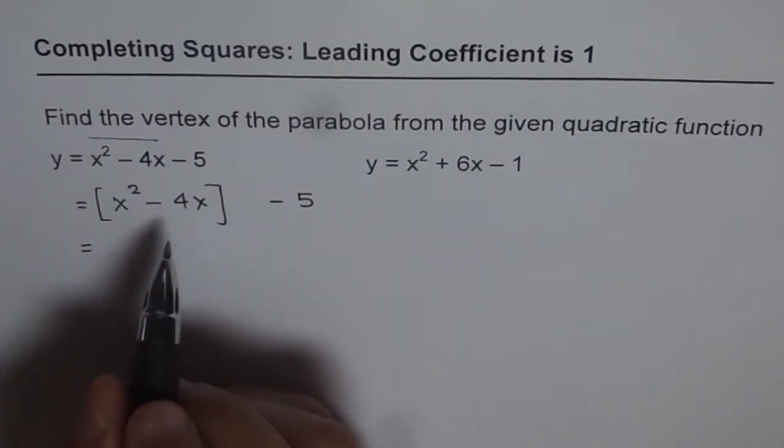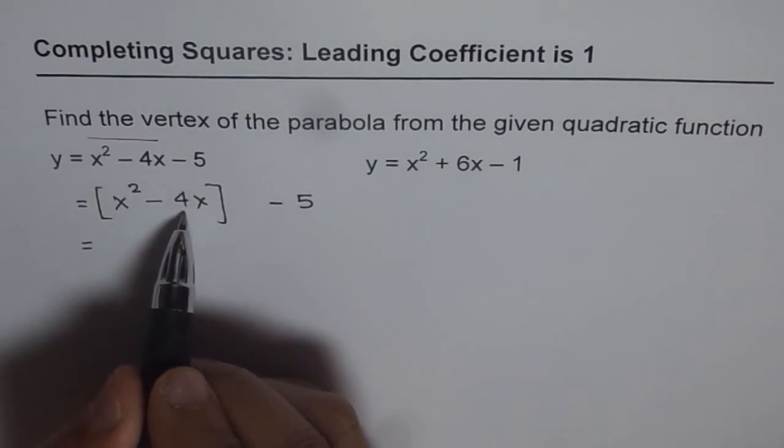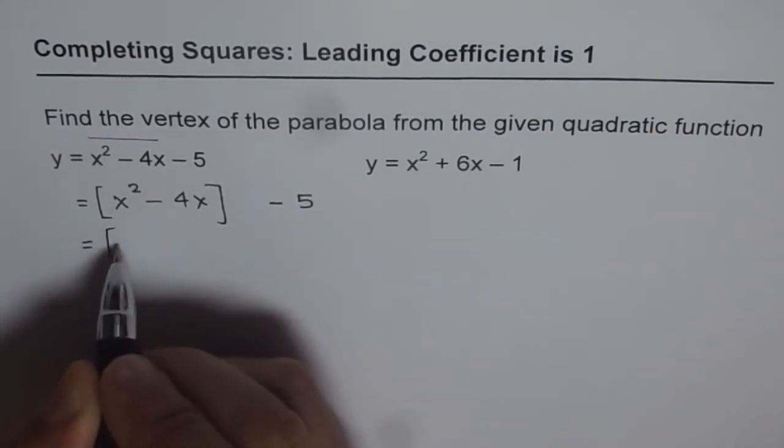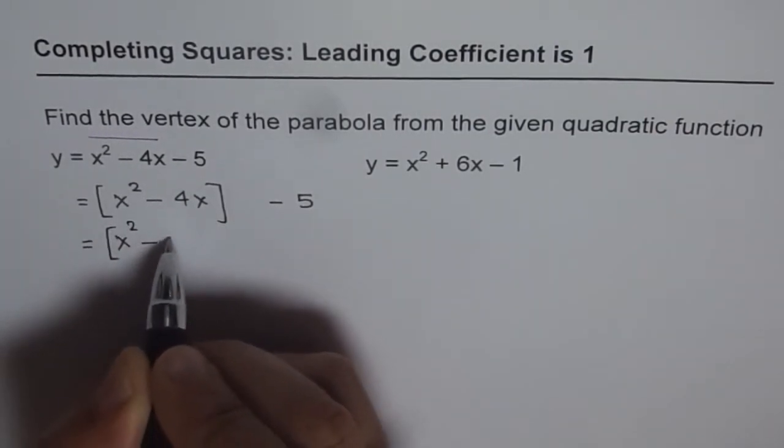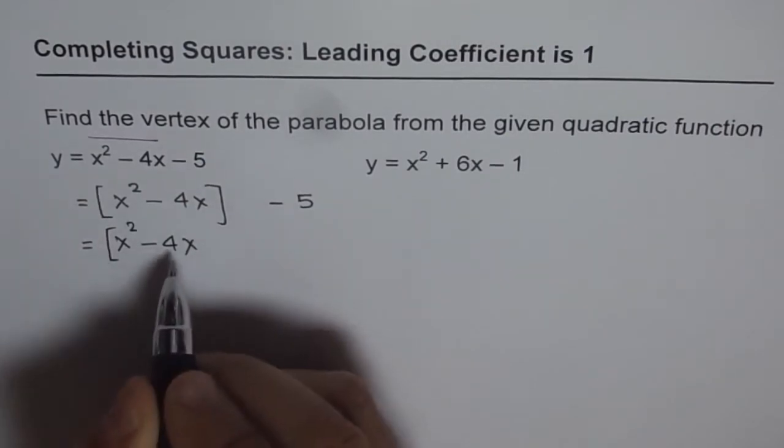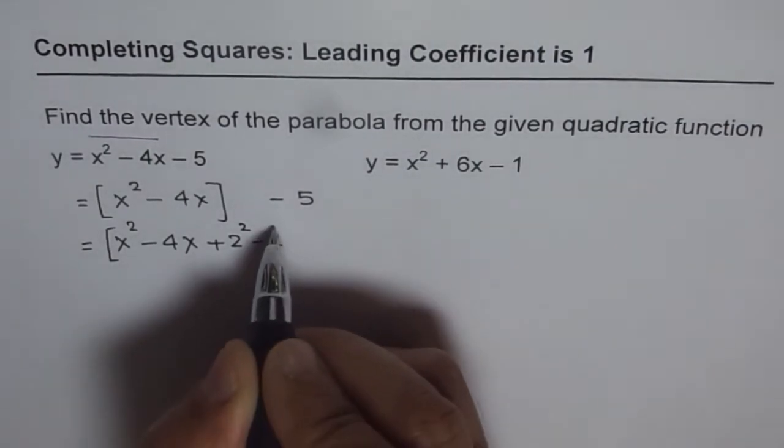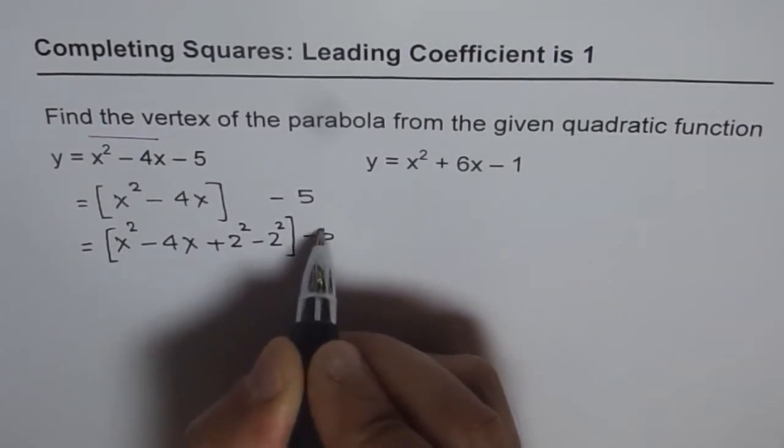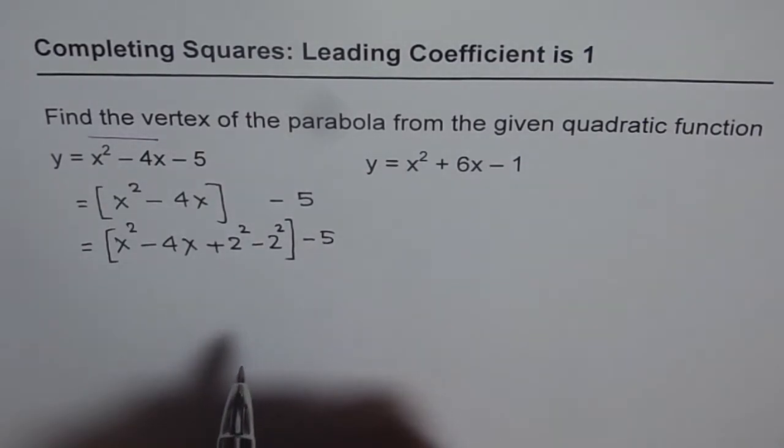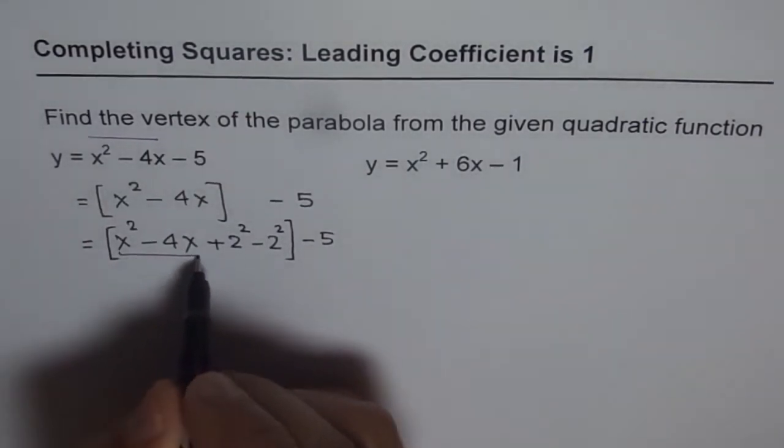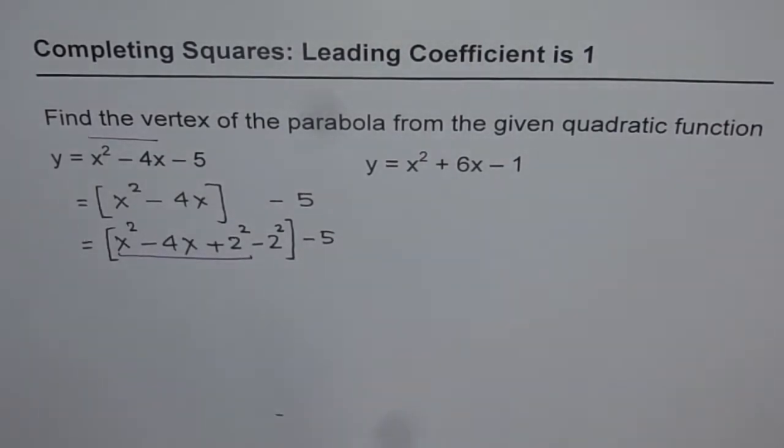Second part is, do half of 4. What is half of 4? 2. We add and subtract square of that number. So that is what we do inside this bracket. So we have x squared minus 4x, just copy it as such. Half of 4 is 2. So we will add and subtract 2 squared to this term. And what we get is a step closer to completing the squares. Now you can see that the first three terms form a perfect square.